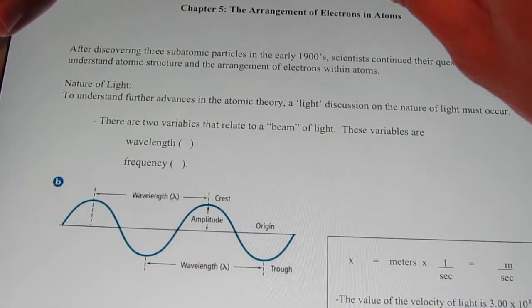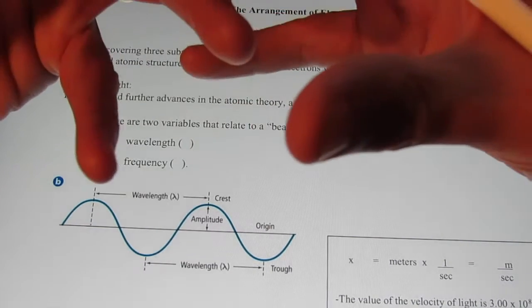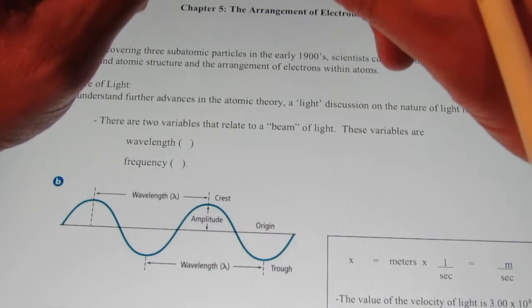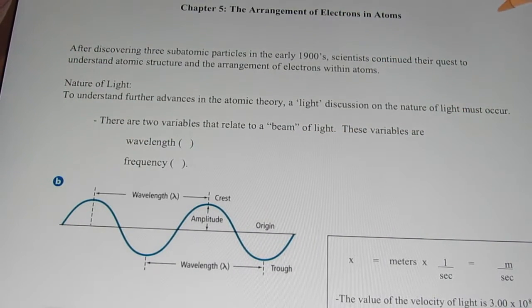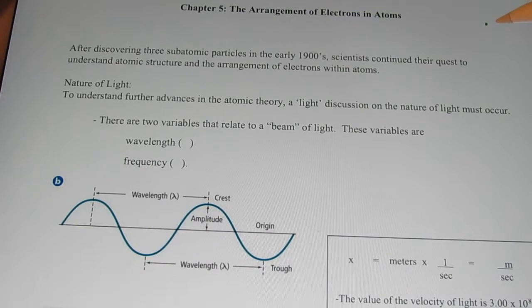Before we talked about the mole concept, we talked about Ernest Rutherford, and he discovered that most of the mass of the atom was concentrated in a very dense core. Do you remember what he called that? That's right, he called that the nucleus of the atom, and it was positively charged, and almost all of the mass of the atom was in that tiny little spot.